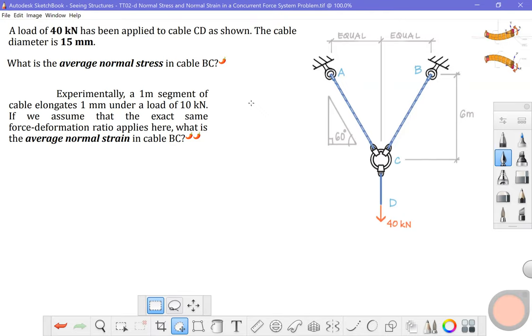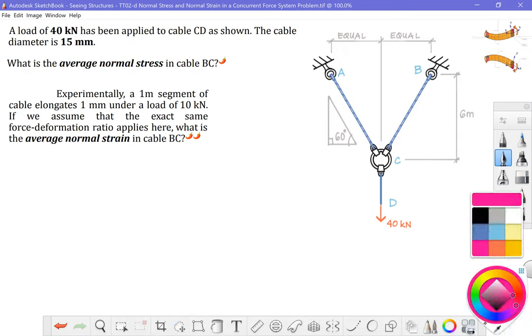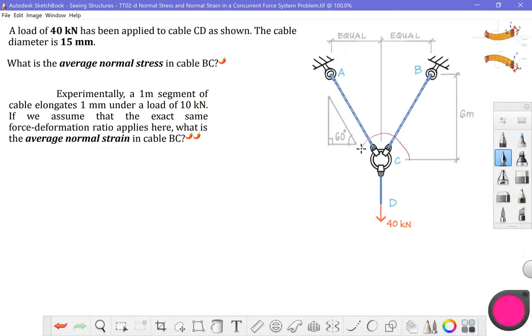Hello. In this problem, we have what is called a concurrent force system. Pragmatically, it looks like we've got some type of a ring connector here, and that we've essentially connected two cables to maybe some eye bolts, some supports up here. And from that, we are hanging a weight from a third cable. So we'll see in a minute that this will turn out to be a concurrent force problem. But for now, let's read the problem description and then jump into it.